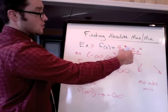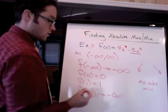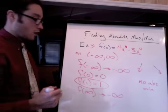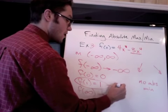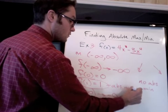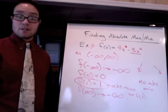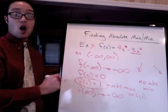If I plug in 1, I'm getting, let's see, 4 minus 3 is 1. So there's no lowest number, but this is the highest number. f(1) equals 1. So that tells me there's an absolute max at 1 comma 1. Absolute max, no absolute minimum.